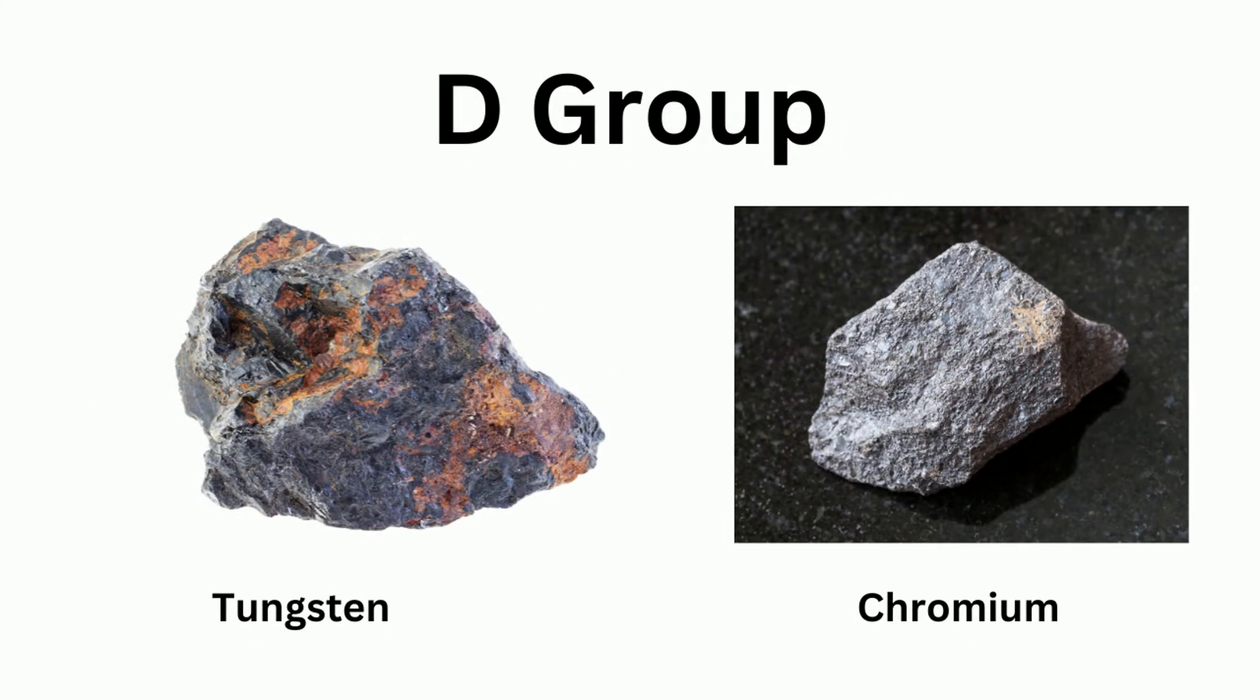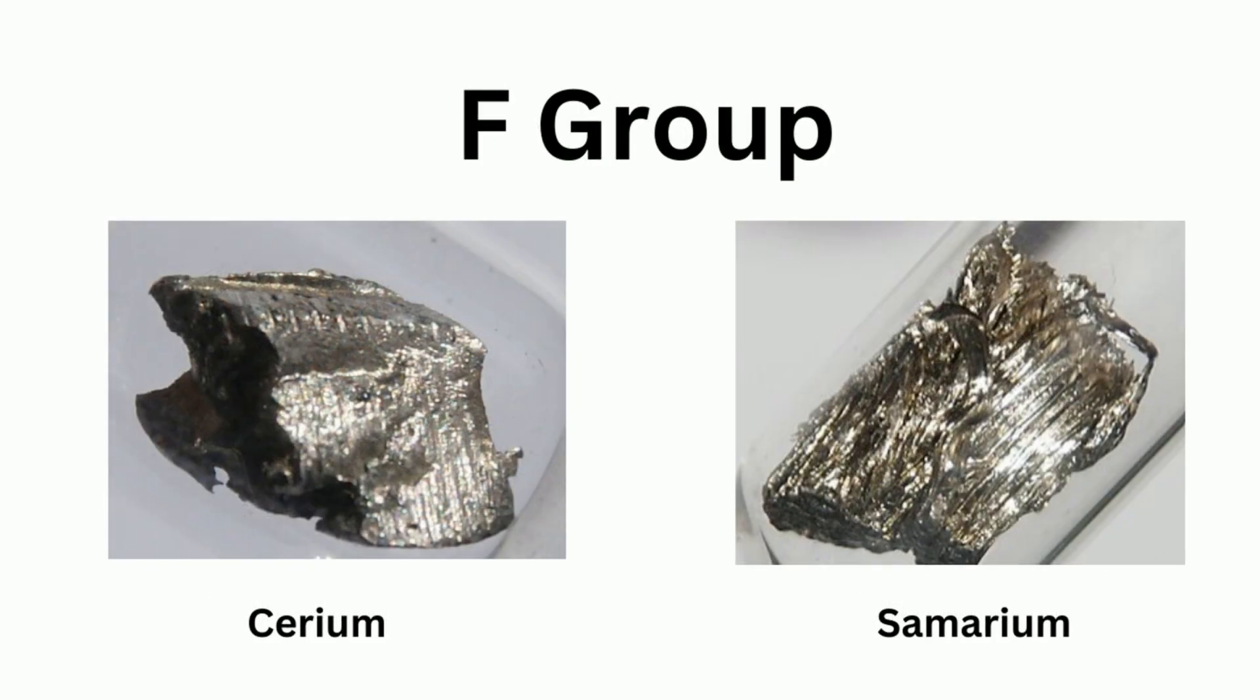D block elements have high melting and boiling points and contain the transition metals. And the F block contains the inner transition elements which are metals with high melting points.